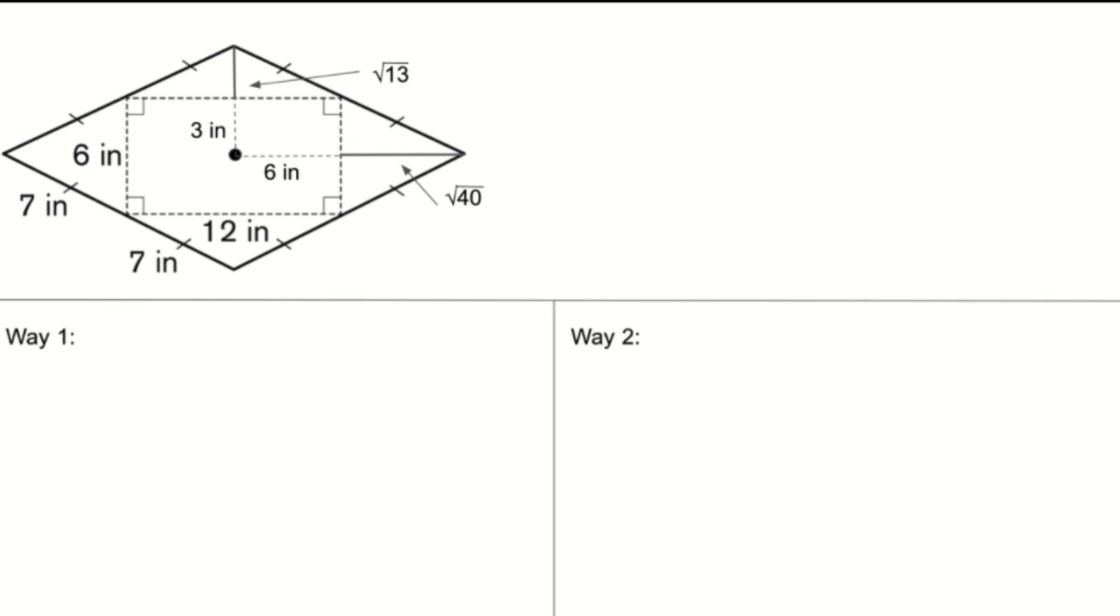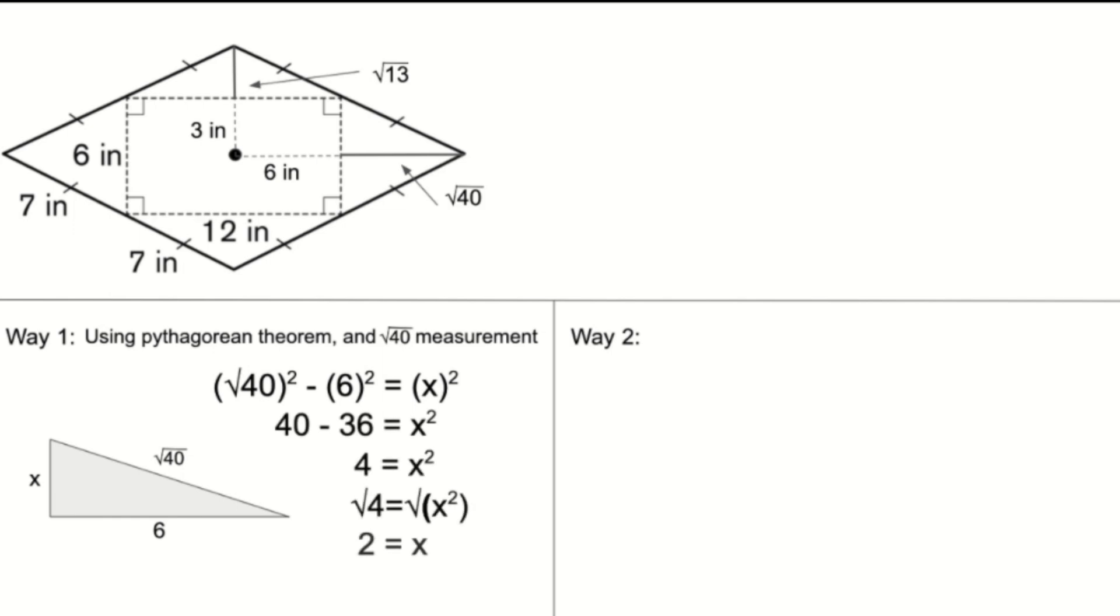There's two ways of finding the height of this pyramid. The first way is using the Pythagorean theorem and the root of 40 measurement. We can insert the root of 40 measurement into the Pythagorean theorem equation. In the equation, x represents the height of the pyramid, and 6 represents the bigger dimension of the midpoint. We can insert the values into the equation, and we get 2 is equal to x, and so we know the height of the pyramid has to equal 2 inches.